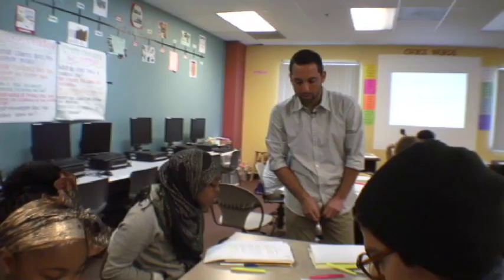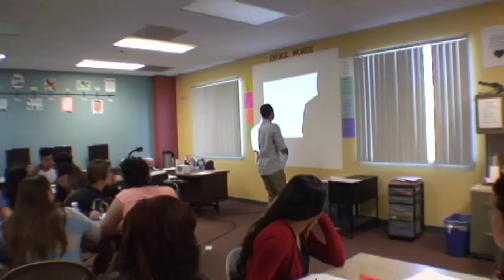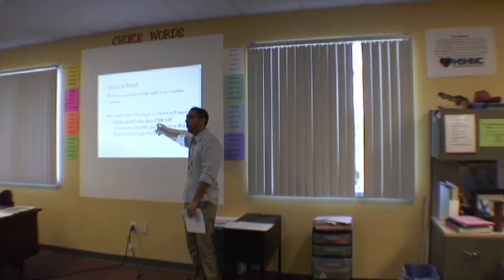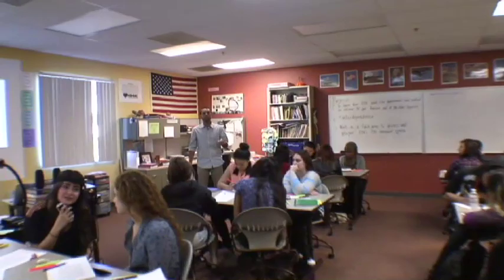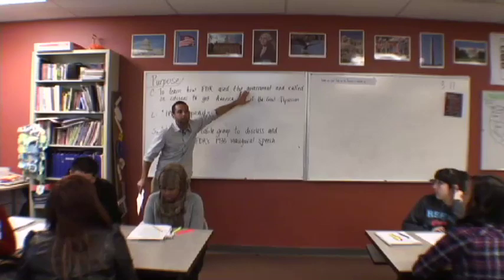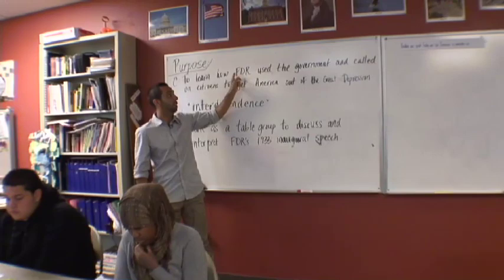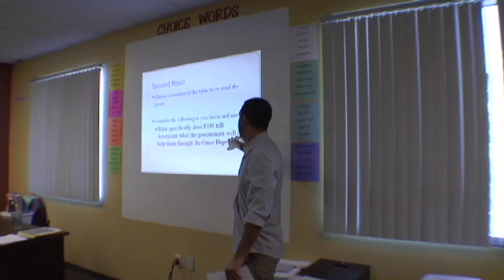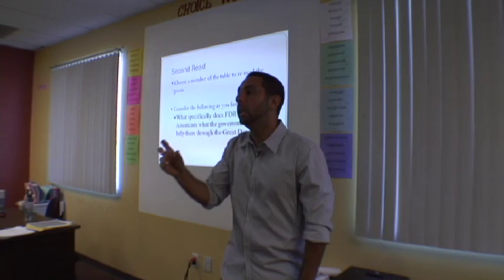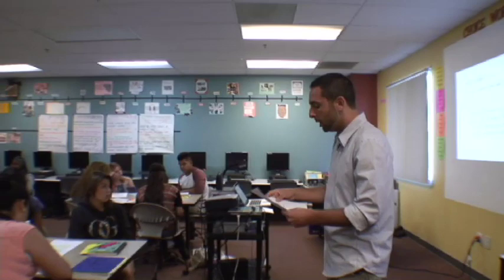As you listen to the second read, consider this question: what specifically does FDR tell Americans the government will do to help them through the Great Depression? After the second read, remember our purpose — to learn how FDR used the government. Discuss at your table using evidence from the text to support your claims.